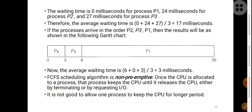The waiting time for P1 is 0 milliseconds because it immediately got the opportunity to use the CPU. The waiting time for P2 is 24 milliseconds because P1 was using the CPU for the first 24ms. The waiting time for P3 is 27 milliseconds. Therefore, average waiting time is (0 + 24 + 27) / 3 = 17 milliseconds.